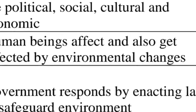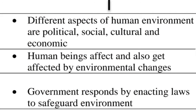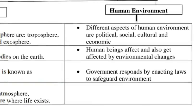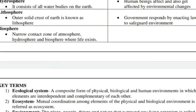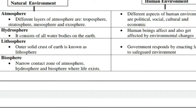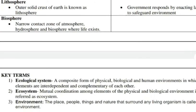Human beings affect and also get affected by environmental changes. We have seen this in the form of buildings, roads, etc. If there is any change in environment, then we are also changed. Government responds by enacting laws to safeguard the environment. Human-made environment means the environment which is made by humans — for example, buildings, roads, monuments, etc.